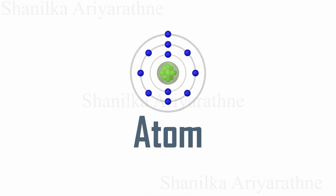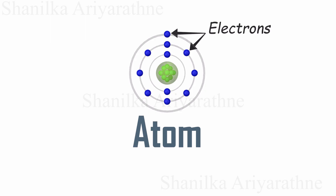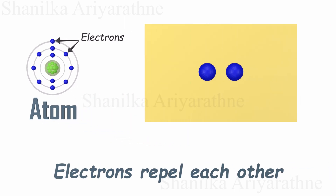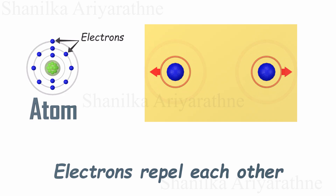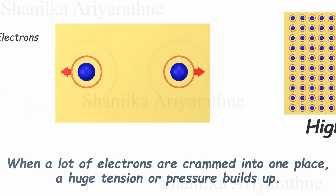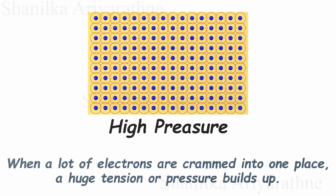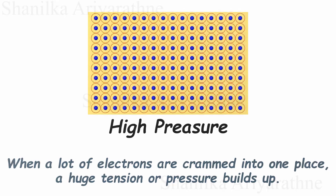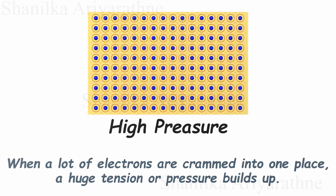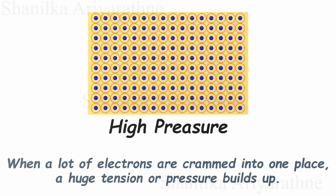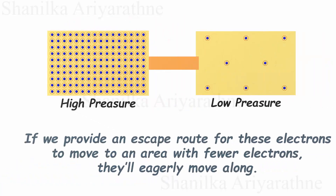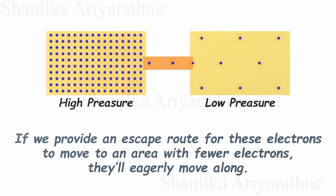Let's start with electrons. One of the most fundamental properties of electrons is that they don't like each other. They always try to move away from each other as much as possible. When a lot of electrons are crammed into one place, a huge tension or pressure builds up. If we provide an escape route for these electrons to move to an area with fewer electrons, they'll eagerly move along.